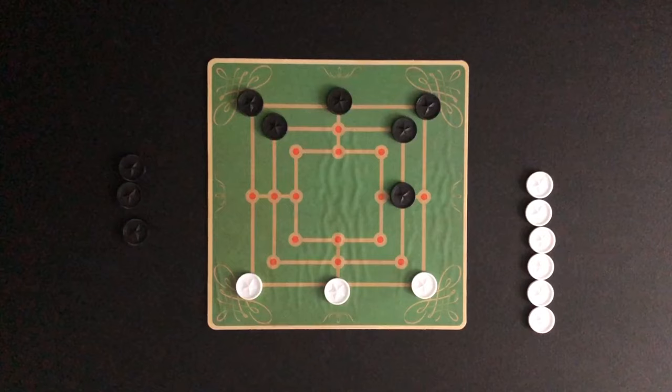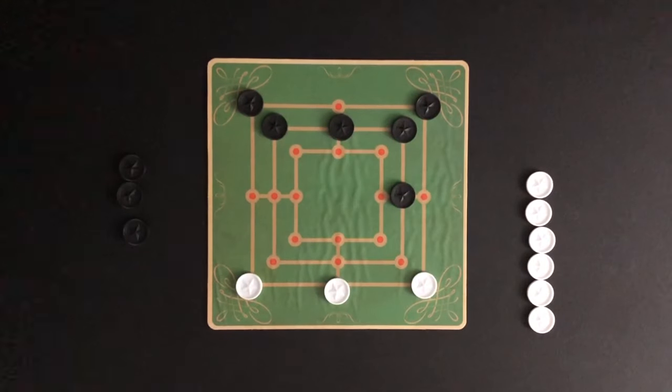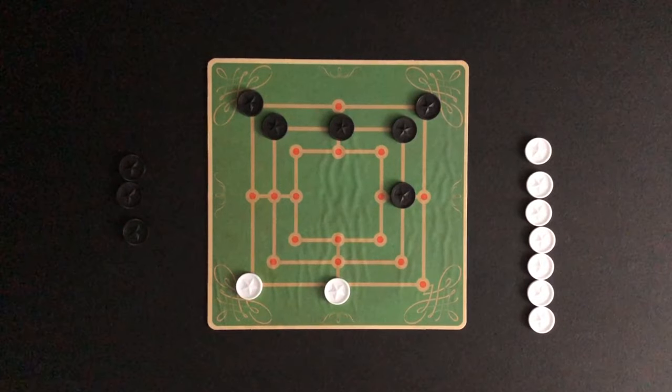A player is not able to remove an opponent's marker if it is part of a three in a row. But, if a player only has markers in a row and their opponent has made three in a row, the opponent is able to remove a marker from a row of three since there are no other options.